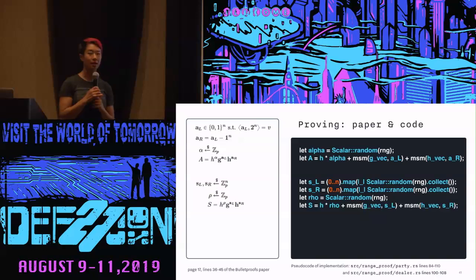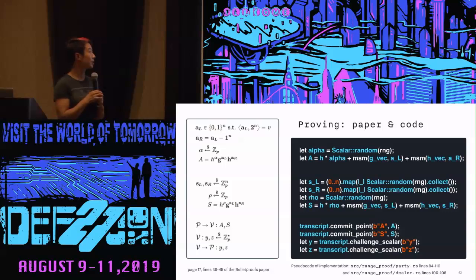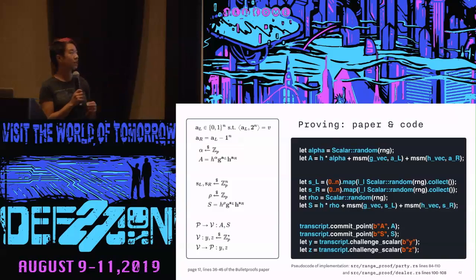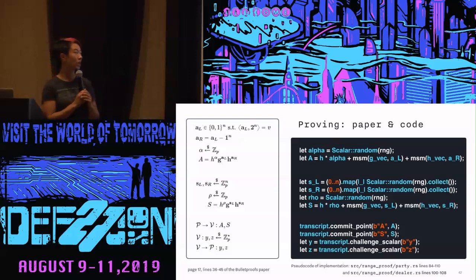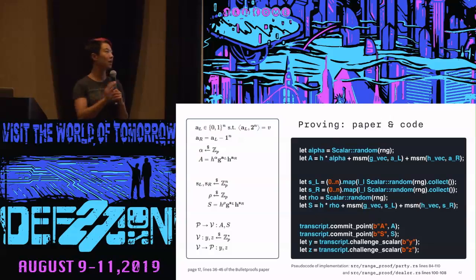We do the exact same thing but with S sub L and S sub R, which are blinding factors for a sub L and a sub R. We generate those, generate a blinding factor rho, and create a big S — the commitment to all of those things. Now we have the exciting part: the Fiat-Shamir heuristic. In the paper it says: send A and S to the verifier. In practice in the code, thanks to our Merlin transcript object, we just commit the points A and S to the transcript. Then where the interactive protocol says get Y and Z from the verifier, we get the challenge scalars for Y and Z from the transcript. You can see these domain separators at every step, making sure we're not confusing A and S with any other steps.